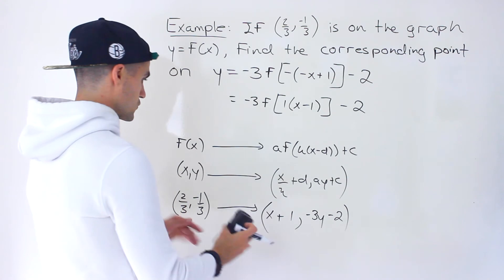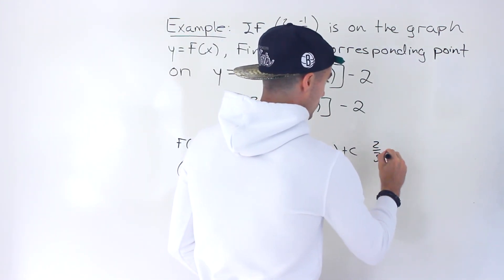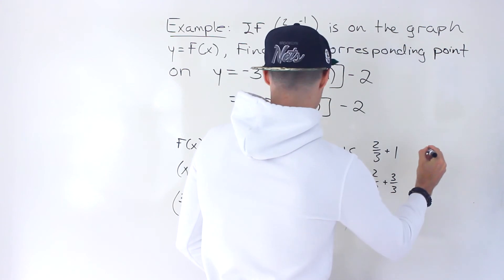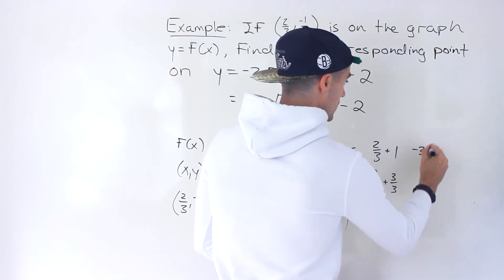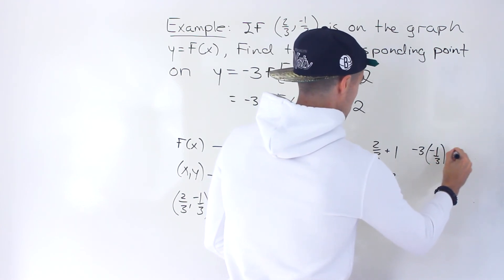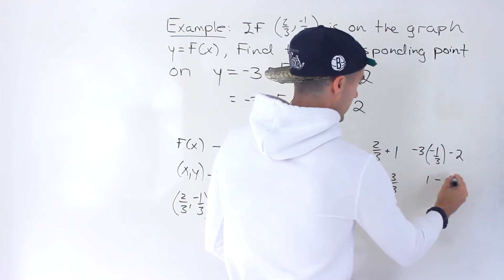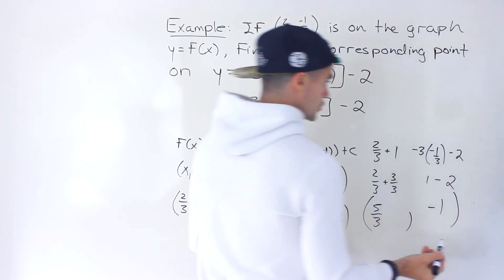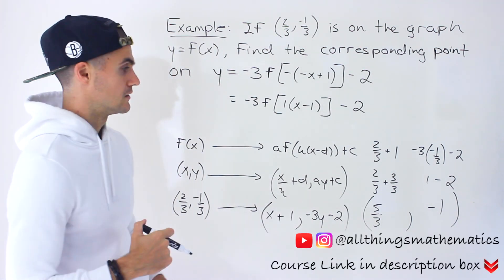So we would take this x value of 2 over 3, and then add 1. We put in that formula. So 2 over 3 plus 1 would be like 2 over 3 plus 3 over 3, which would give us 5 over 3. And then the y value of negative 1 over 3, we multiply it by negative 3. And then we subtract 2 like that. And so we'd end up here with 1 minus 2, which would give us negative 1.